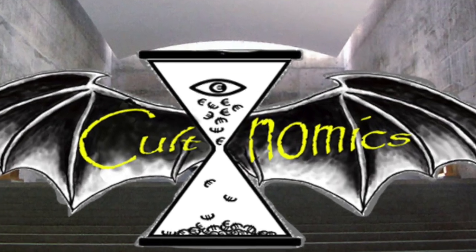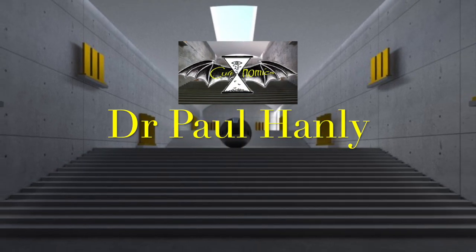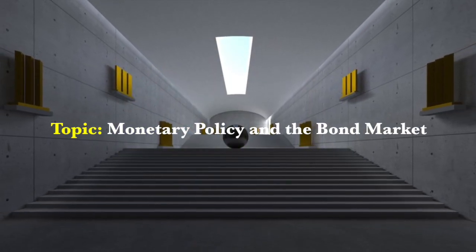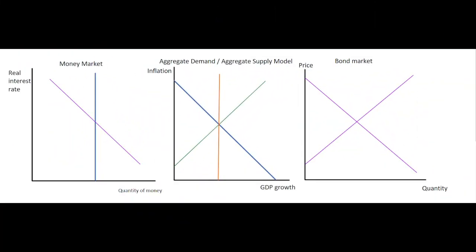Hi guys and welcome to Cultnomics. My name is Paul Hanley and today I'm going to be chatting to you about monetary policy and the bond market. In this video we're going to look at the impact of expansionary monetary policy on the bond market. We'll look at the impact first on the money market, translate that into the real economy, and then move on to the bond market to see the impact on yield.